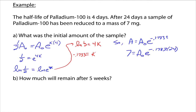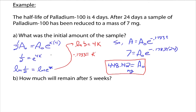You bring out your calculator. E to the negative 0.1733 times 24 is just some decimal number. We divide 7 by that number and get A naught. So A naught is approximately 448.142 milligrams. The initial amount was 448.142 milligrams. First we used the half-life to figure out the decay constant, then we plugged it in and answered the question that was being asked.